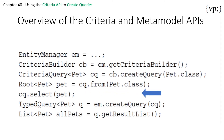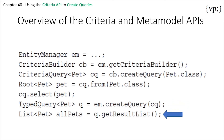Then you prepare the query for execution by creating a typed query instance specifying the type of the query result. And finally, you execute the query by calling the getResultList method on the typed query object. Because this query returns a collection of entities, the result is stored in a list.